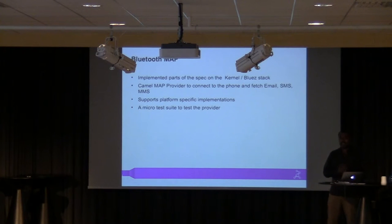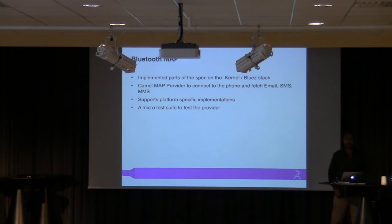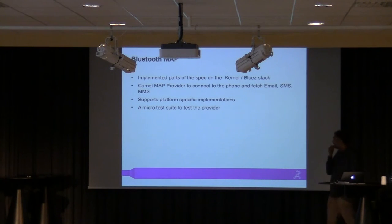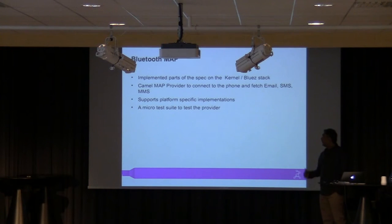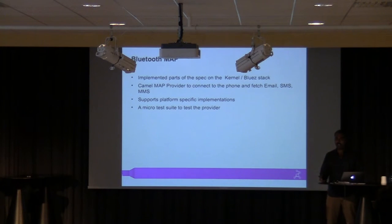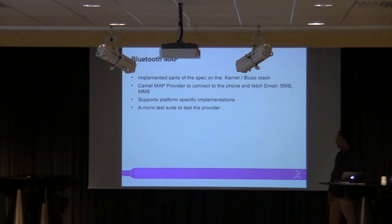What I had done was think about the Camel MAP provider — the Camel provider architecture. You can write a provider for Camel which connects to Bluetooth. That's what this Camel MAP provider is. It is on GitHub today in my public repository. The Camel MAP provider allows you to connect through Bluetooth to your phone and will sync your emails, SMS, and MMS. I haven't tested MMS because I don't have an MMS service, at least not in India. But emails and SMS can connect from your phone to the Camel engine.